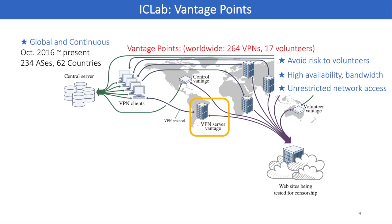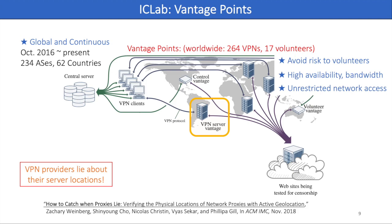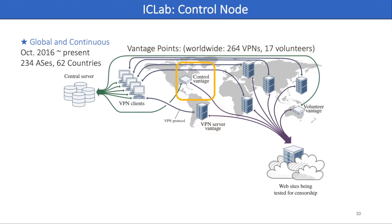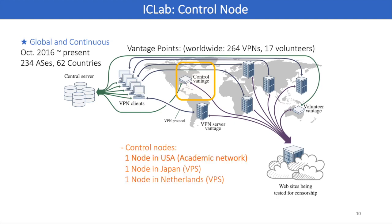But there is a limitation of using VPNs — as you know, some VPN providers lie about their server locations. Thus, before we use the VPN servers, we first validate their location with our geolocation checker. If you want to know about how we validate the server location in detail, please refer to our paper and our IMC 2018 paper. iCELAB has three control nodes where we expect that censorship doesn't exist or exists relatively less: one in an academic network in the US, one in Japan, and one in the Netherlands. These control nodes repeat all the measurements that each vantage point performs.